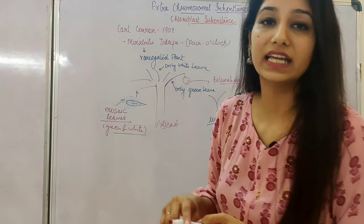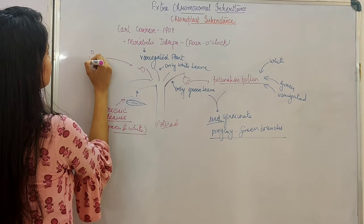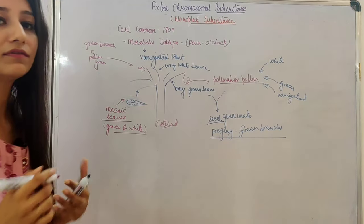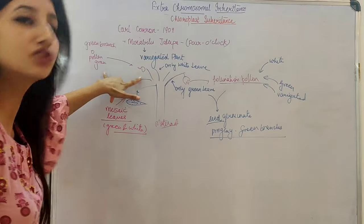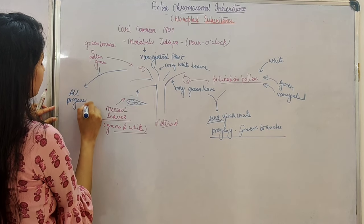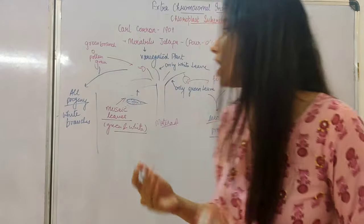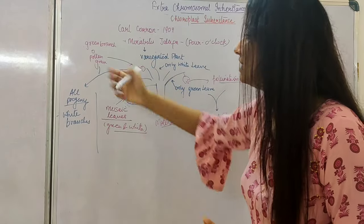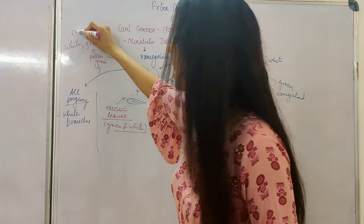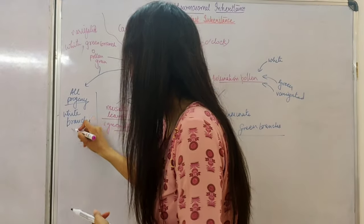He once again did the experiment taking flowers from the white branch and pollinating them with pollen grain coming from a green branch. We might expect a mosaic branch as a mixture of these two, but the result was that all progeny were of white branches — because they came from the maternal white branch. Even if he gave pollen grain from a green branch, a white branch, or a variegated branch, in all cases the offspring was of white branches.